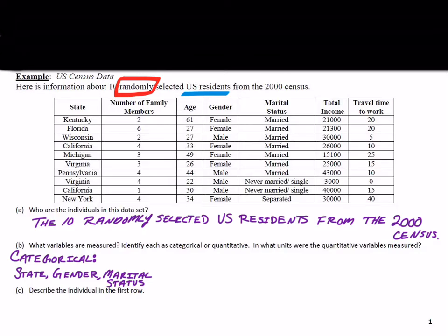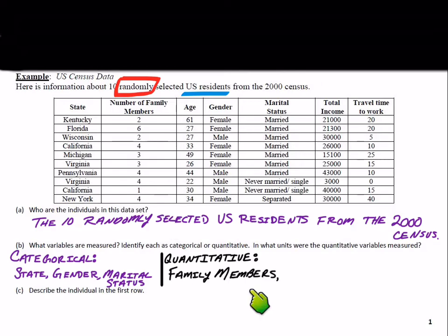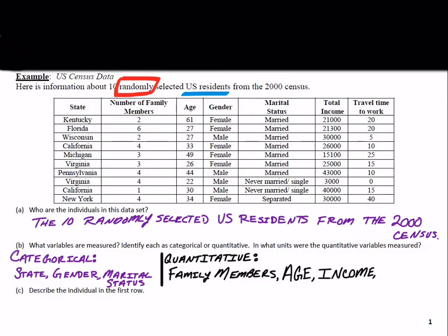The remaining variables are quantitative — they all have numbers associated with them. The quantitative variables are: number of family members, age, total income, and travel time to work. You know they're quantitative because they have numbers and it makes sense to take an average of those values.